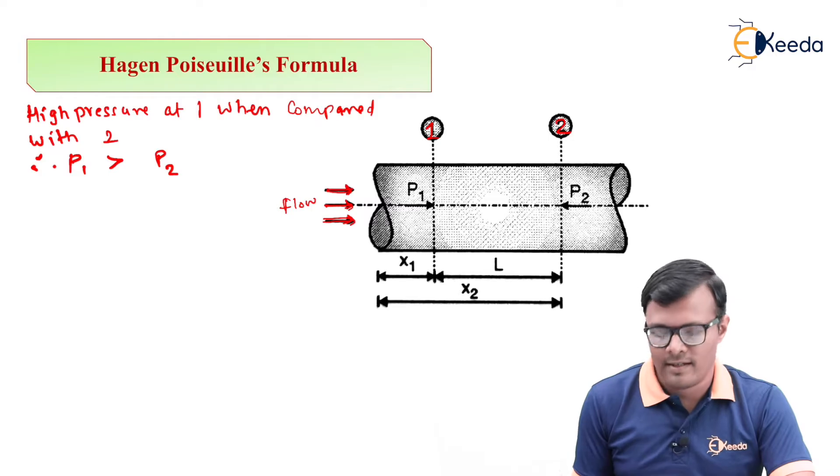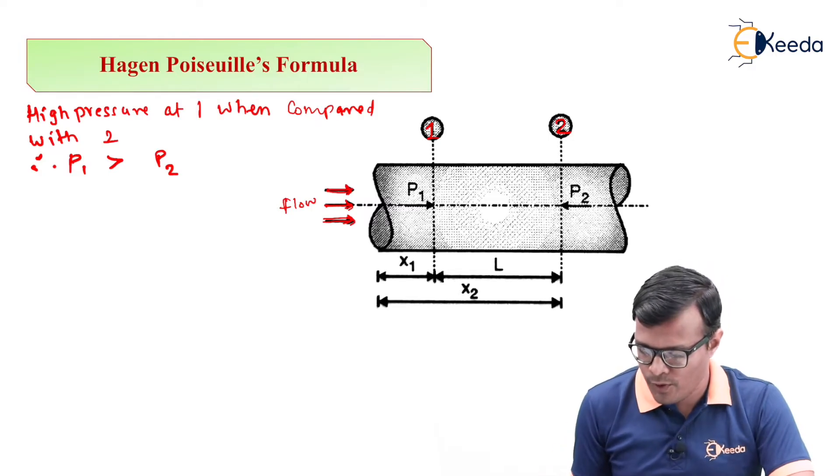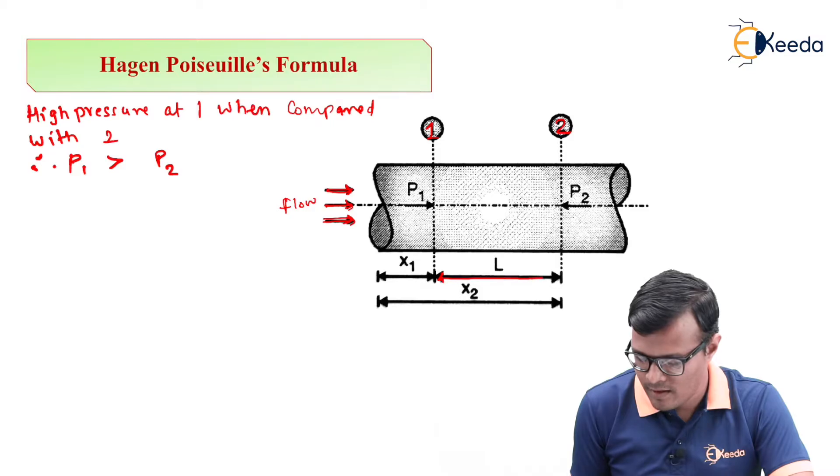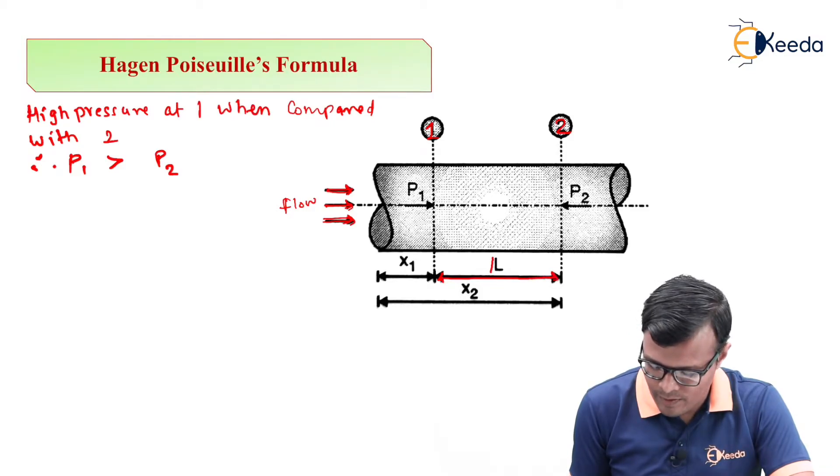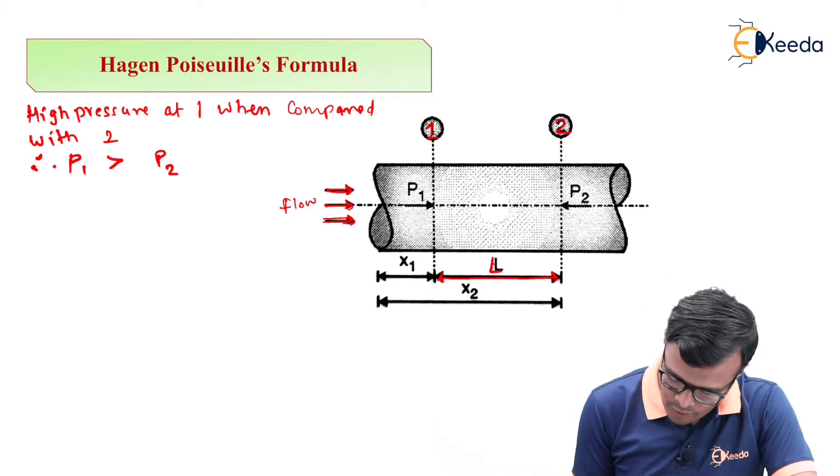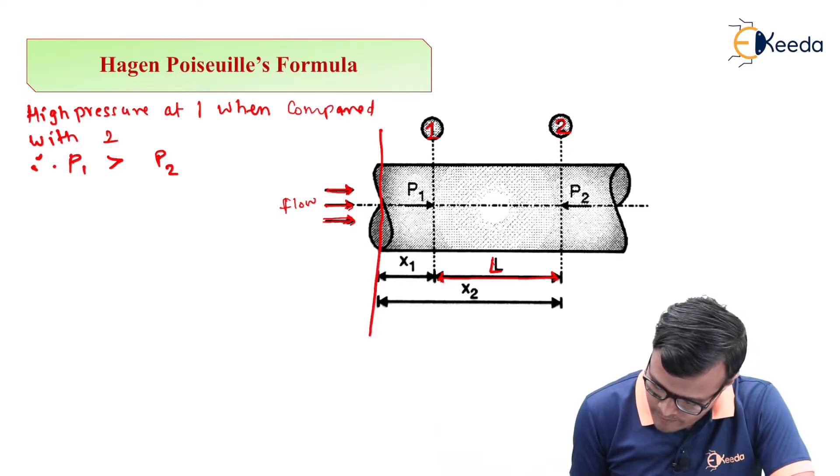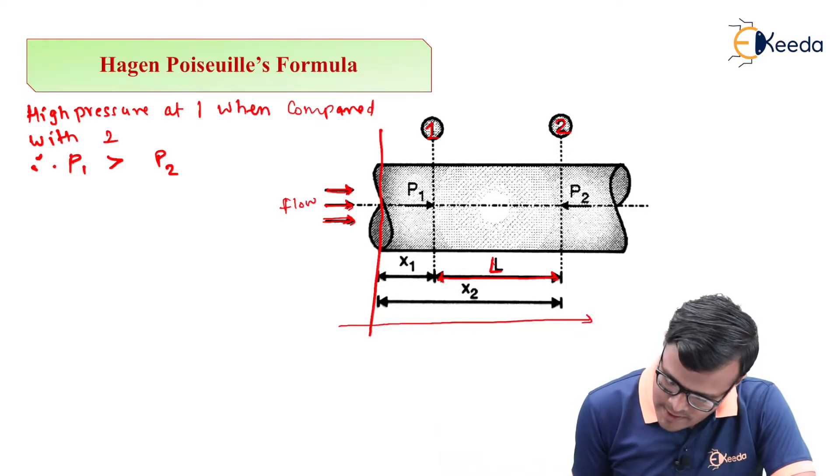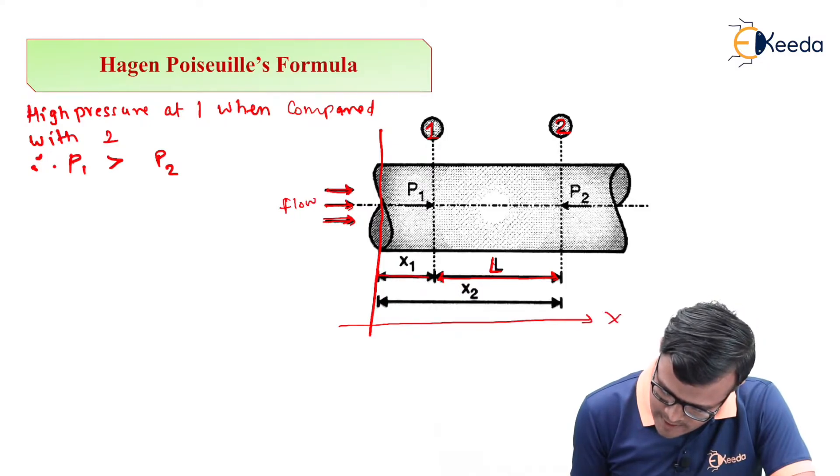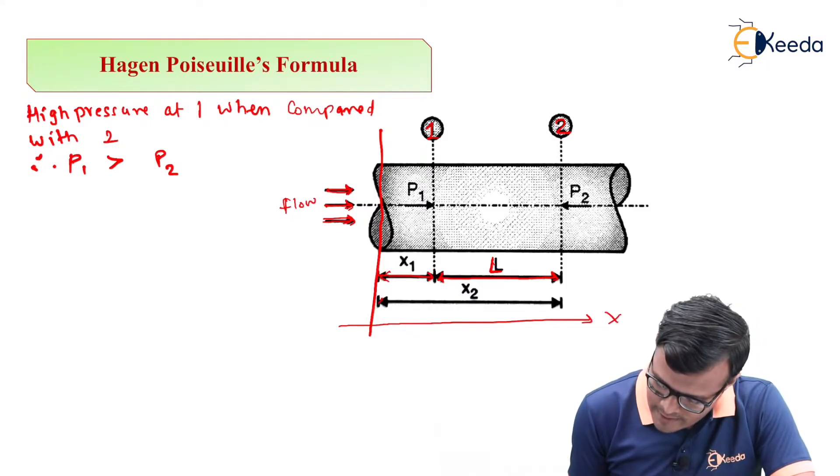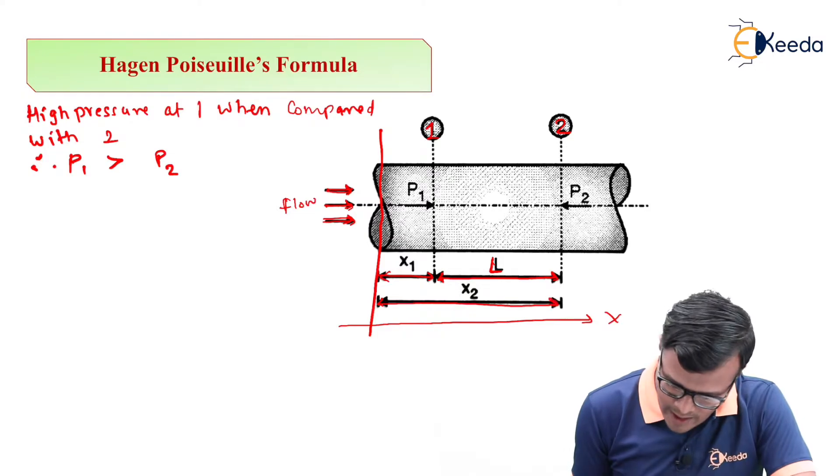Let us consider the distance between these two cross sections be this capital L. The other distance from reference point, this is the x direction, and this distance is x1 and this distance is x2.